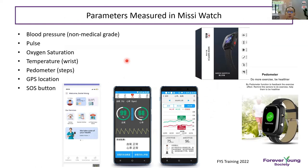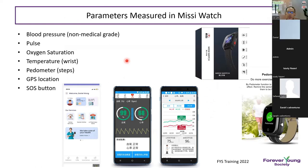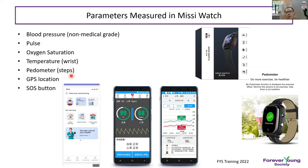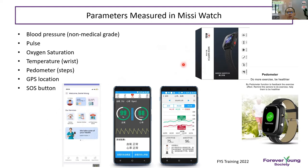We have a Missy Watch. We're going to launch our Missy Watch — an intelligent IoT watch which will monitor non-medical grade blood pressure, pulse, oxygen saturation, temperature, and step count. It has GPS location, especially when the user presses the SOS button. The watch has a red button which will auto-call the children's phone number, send SMS, and alert the linked app.